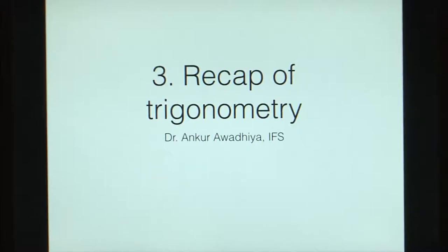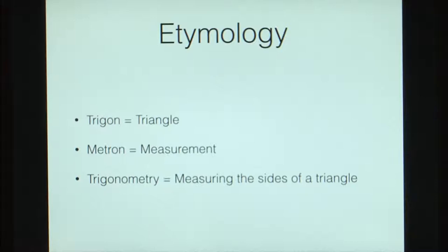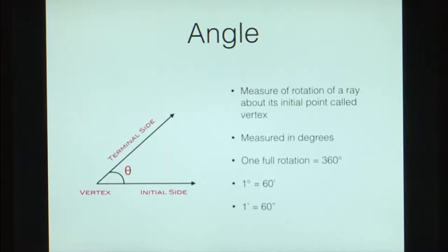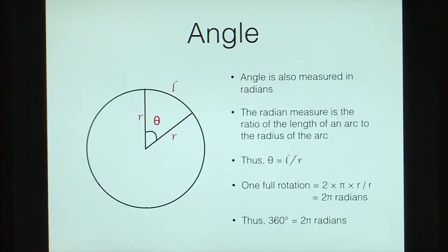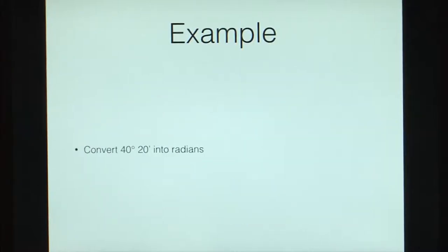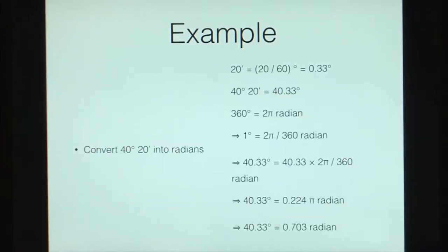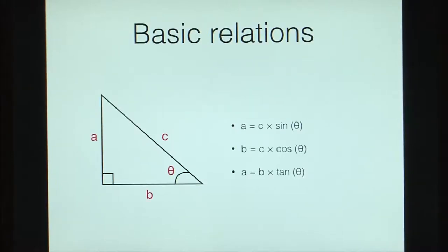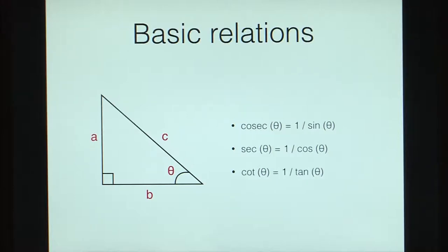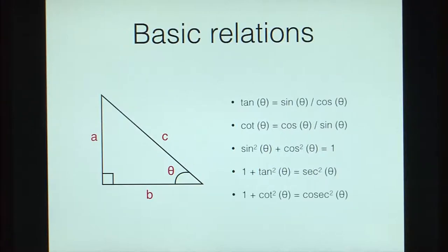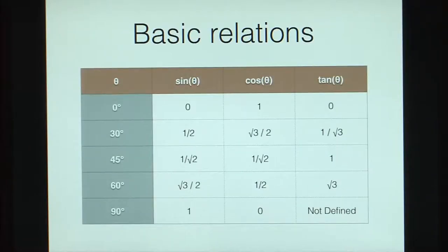Next, we did a recap of trigonometry, which means measuring the sides of a triangle. We defined what an angle is — measured in either degrees or radians with conversion between them. We saw the basic relations: sin θ is the perpendicular divided by the hypotenuse, cos θ is the base divided by the hypotenuse, and tan θ is the height divided by the base. Tan θ is used most frequently when measuring heights of trees. We also defined cosec, sec, and cot θ.